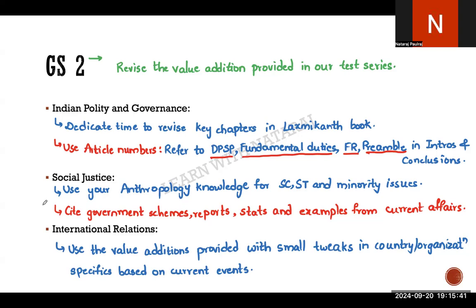For governance, there are many common portions shared with your optional subject — constitutional safeguards for SCs and STs, schemes, initiatives, and their evaluation. Be mentally prepared to use those here. For minorities — linguistic and religious — bring in as many examples and statistics as you can. You don't need to validate every single point; if you can do it for 80% of points, you're still a winner. Anything beyond that is a bonus.